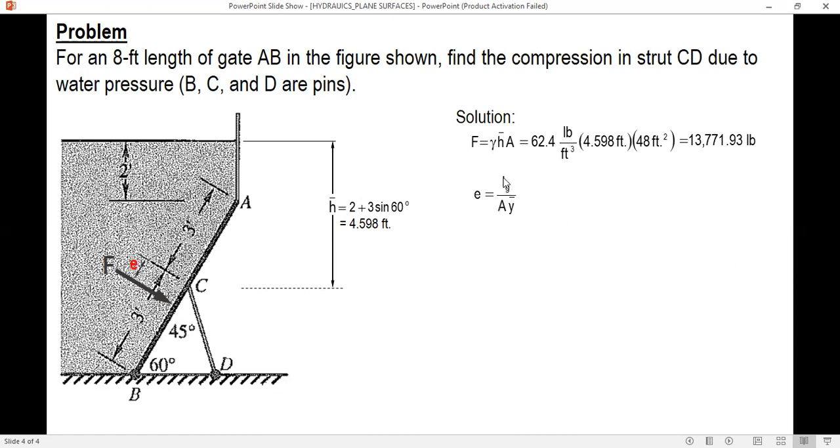Solving for e, the formula is I sub G over area times y bar. We use the formula of a rectangle, 1 over 12 bh cubed, and for y bar this one is 60 degrees minus 60 degrees. And again, y bar is equal to h bar over sine of angle, h bar over sine of 60.